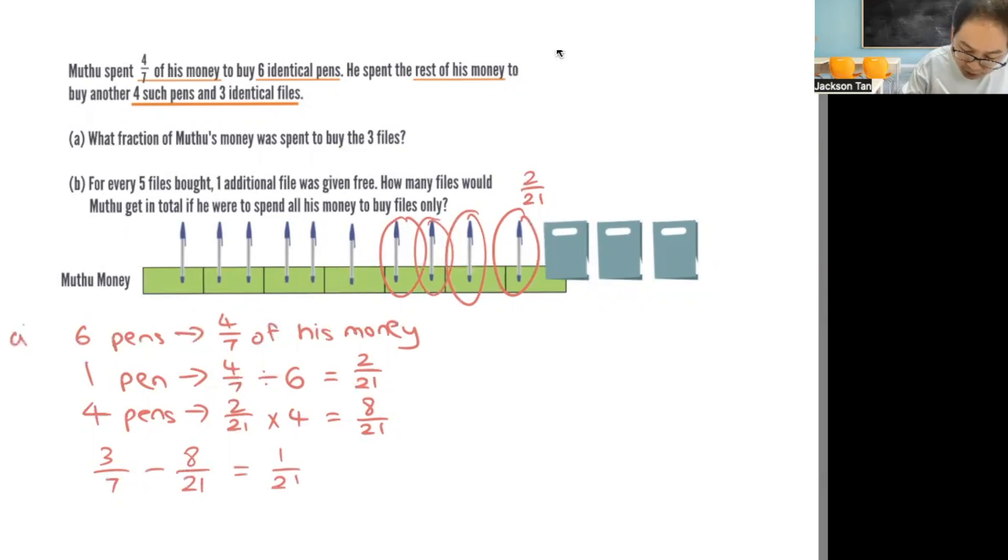So for part A, the three files is one out of twenty-one.